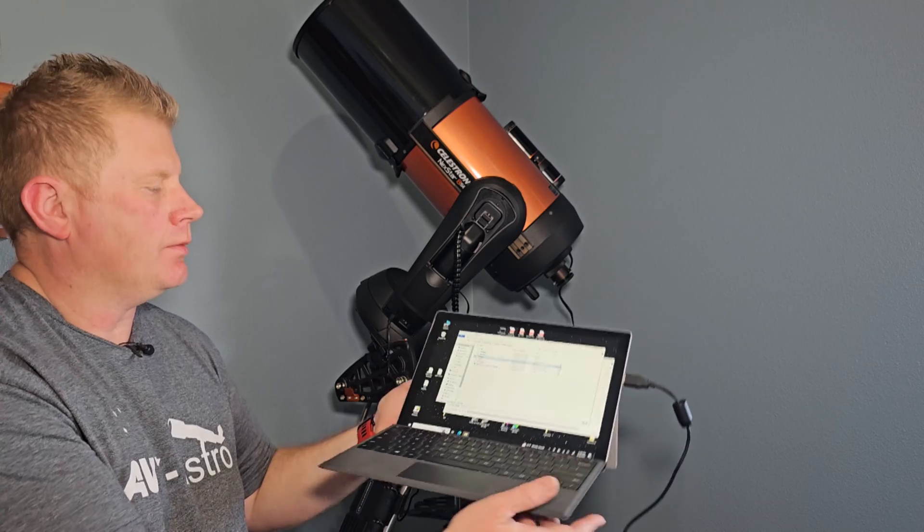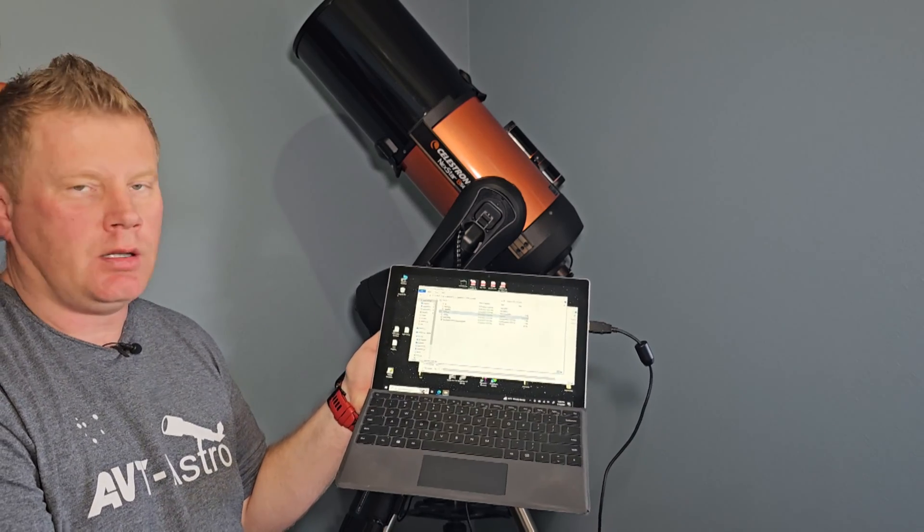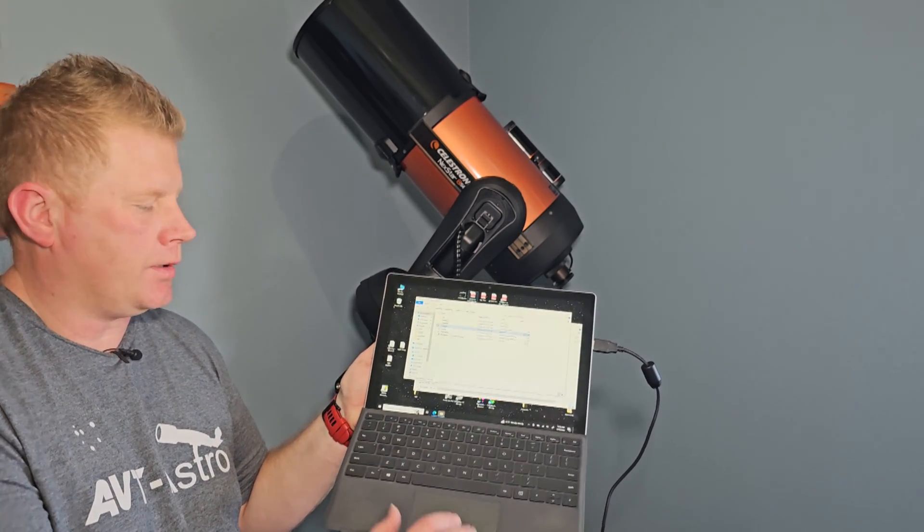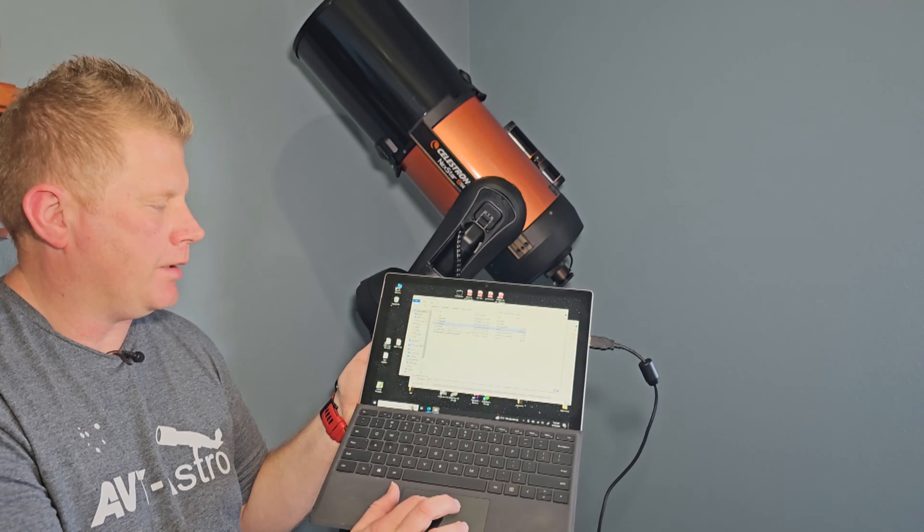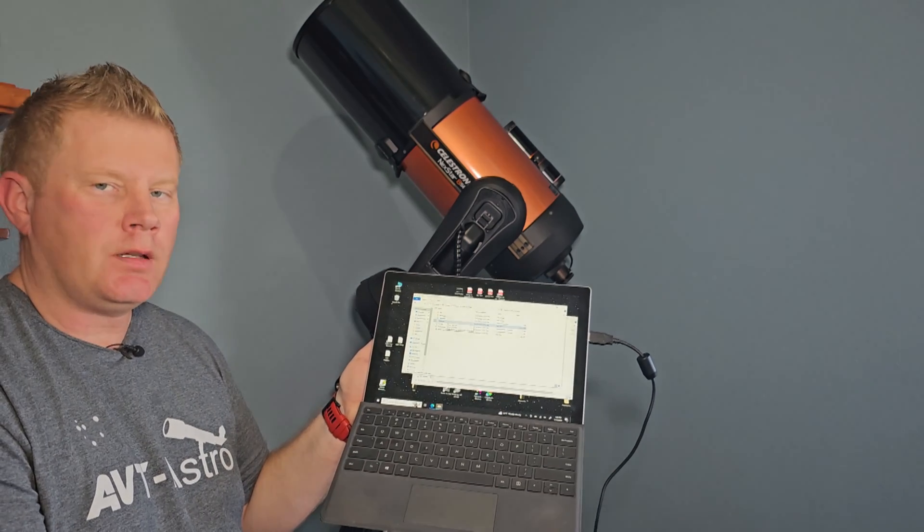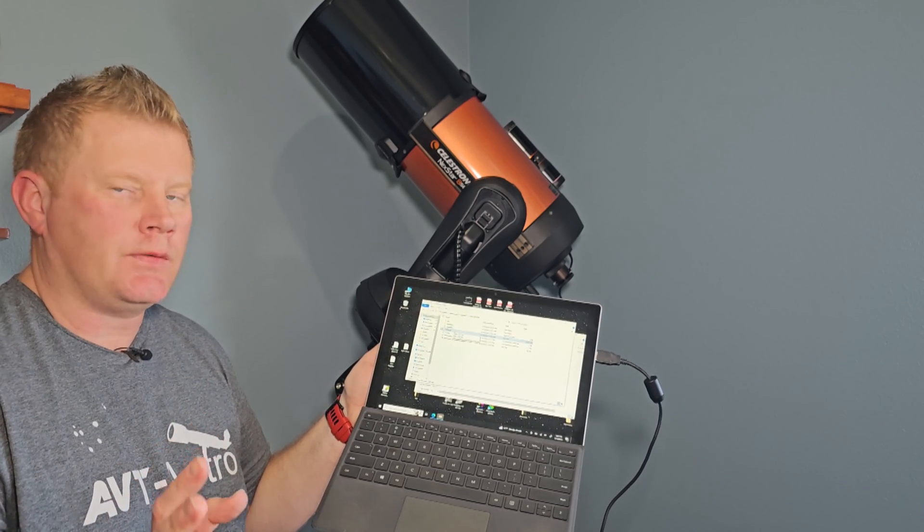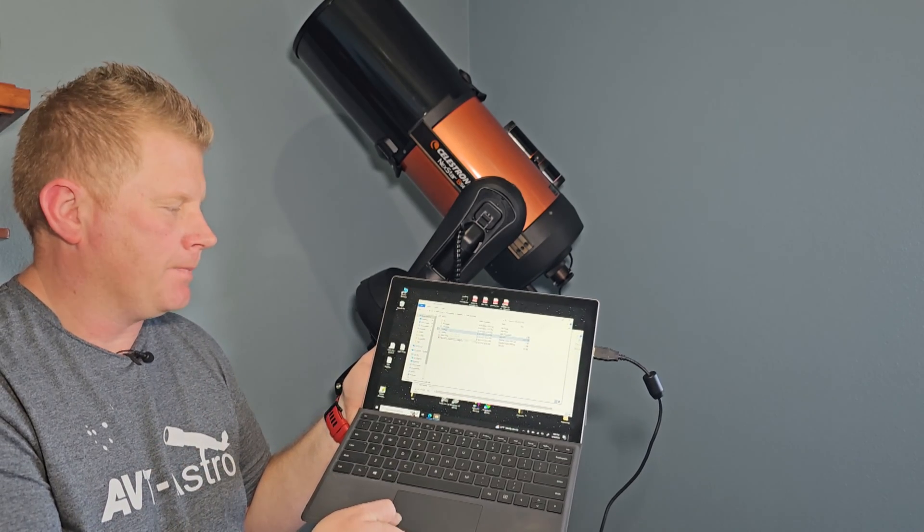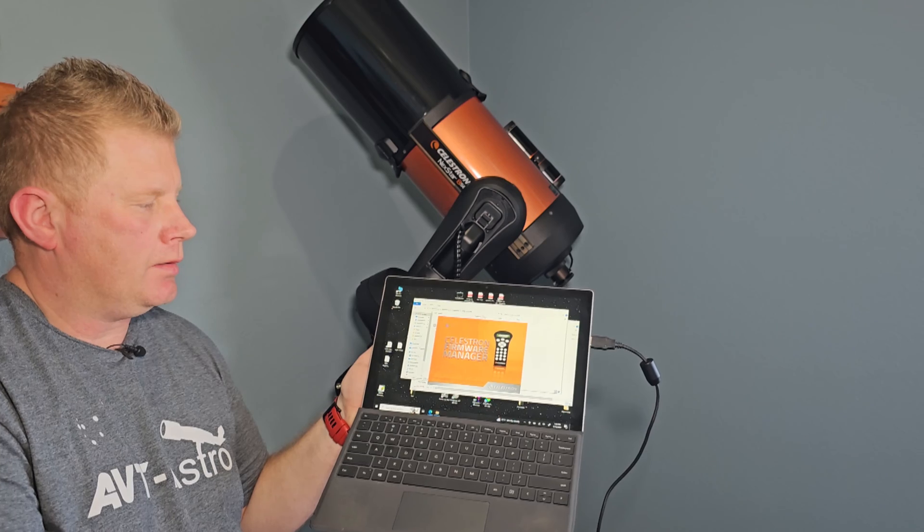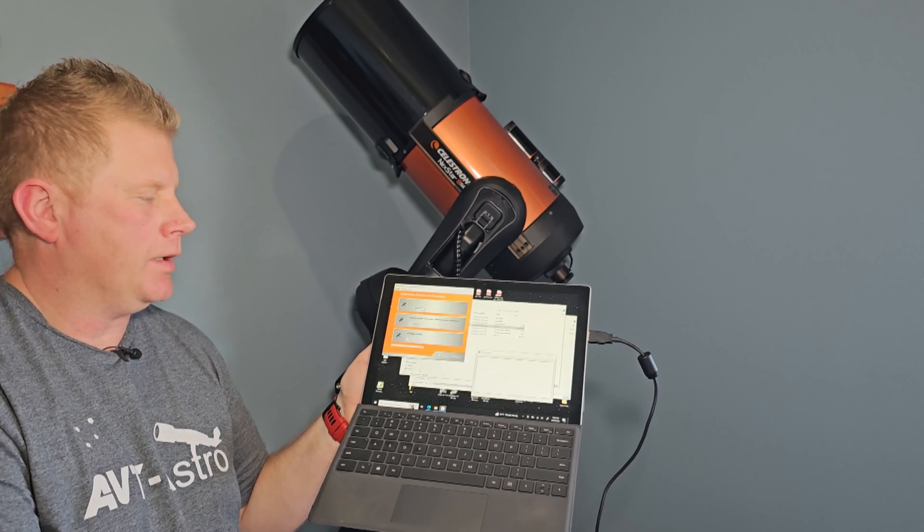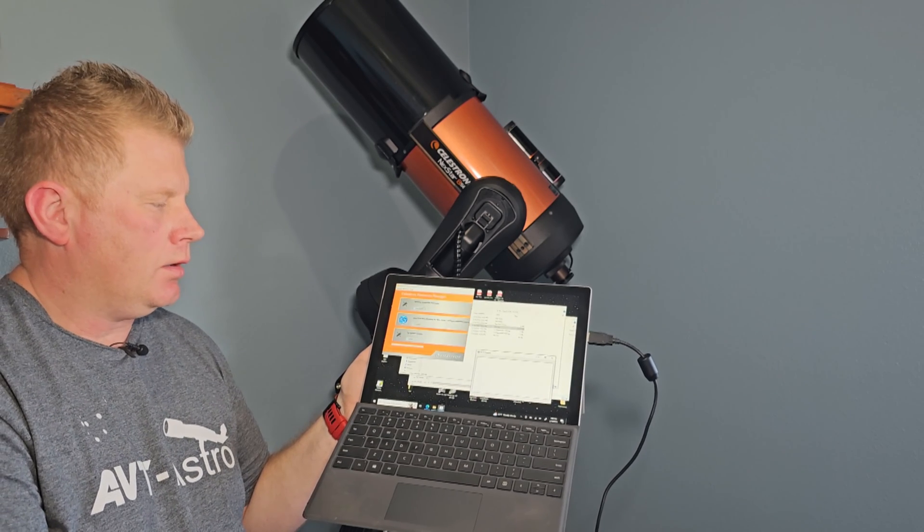Okay so basically when you download the Celestron firmware software you're going to be opening this file right here that's called cfm.jar. Again it will not do anything unless you have Java installed so you need to install Java first. So anyway you open up that. Celestron firmware update manager and then let's see what happens.